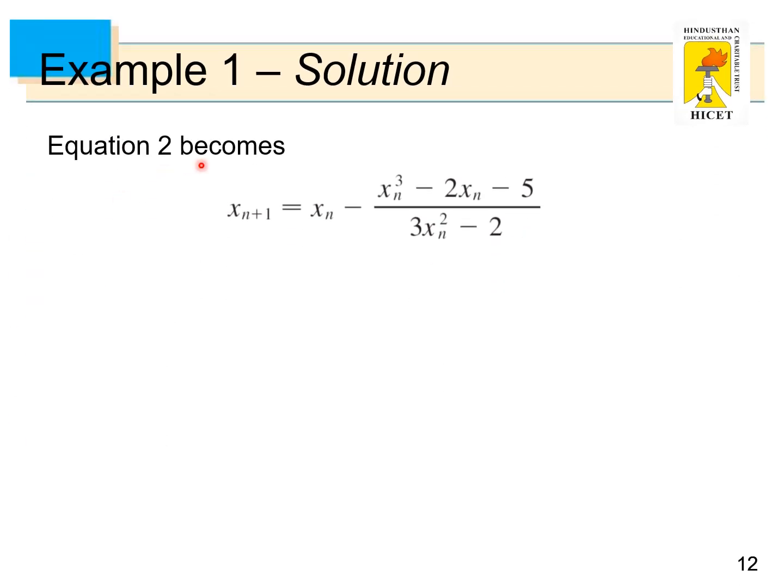Equation 2 becomes x_{n+1} = xn - (xn^3 - 2xn - 5)/(3xn^2 - 2). With n = 1, we have x2 = x1 - (x1^3 - 2x1 - 5)/(3x1^2 - 2). Replacing the value of x1 as 2, that is 2 - (2^3 - 2(2) - 5)/(3(2)^2 - 2). That is 2.1.